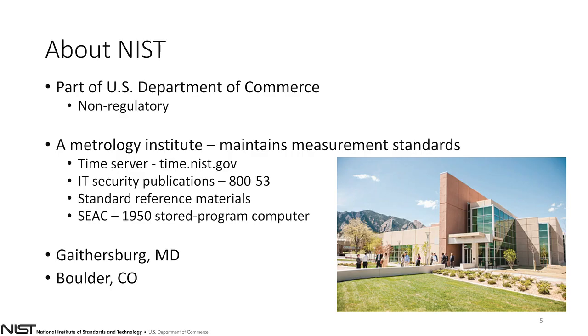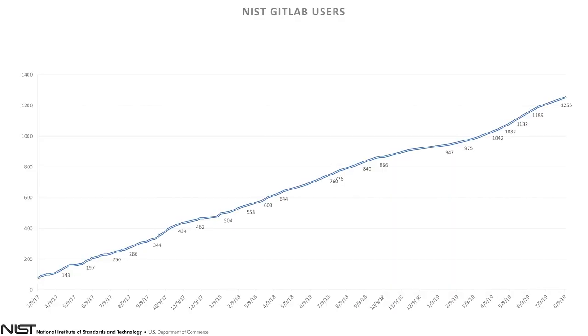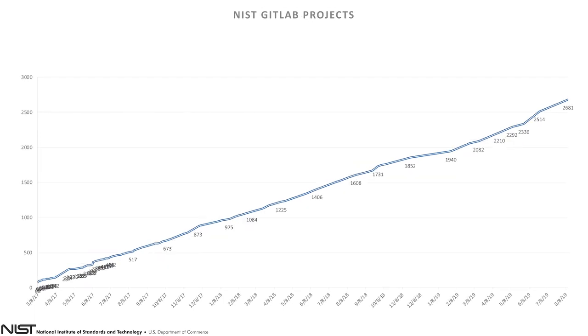NIST actually had the first 1950s stored-program computer — the first computer where you can actually put stored commands into it and then run those commands — was established at NIST. We've got about 5,600 employees at our Gaithersburg location, about a thousand employees at our Boulder location, and this is how we're using GitLab. We started it in 2017 with about 50 users and we've now grown up to 1,255 within NIST, with about 2,681 projects. These are a combination of new software projects and long-term projects like time.nist.gov, which specifies what the exact time is and gets broadcast to pretty much everyone's Android and Apple phone.